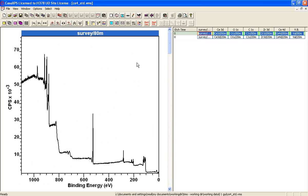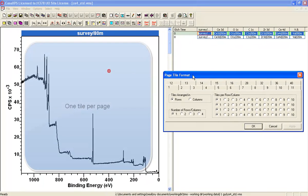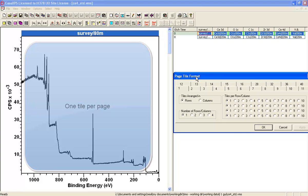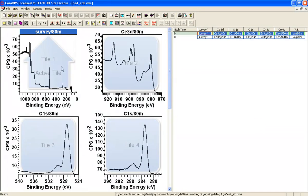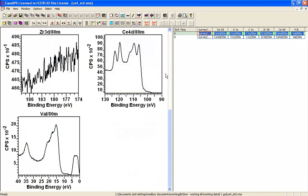We can display more than one tile per page using the Page Tile Format dialog window. If I select four and press OK, you now see four tiles per page, so the number of pages is reduced as indicated by the scroll list.